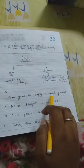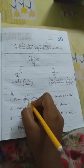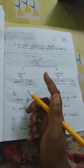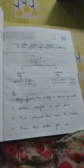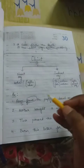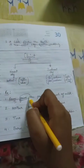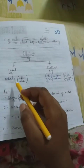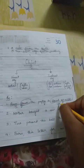Let's use a sentence to make it clear: Ram gave the puppy a bowl of milk. The verb here is 'gave' and the subject is Ram. To find the direct object, ask: Ram gave what? He gave a bowl of milk — so 'a bowl of milk' is the direct object.